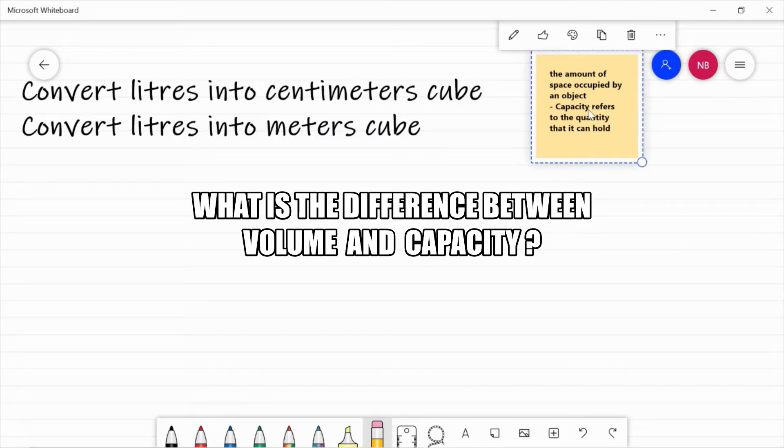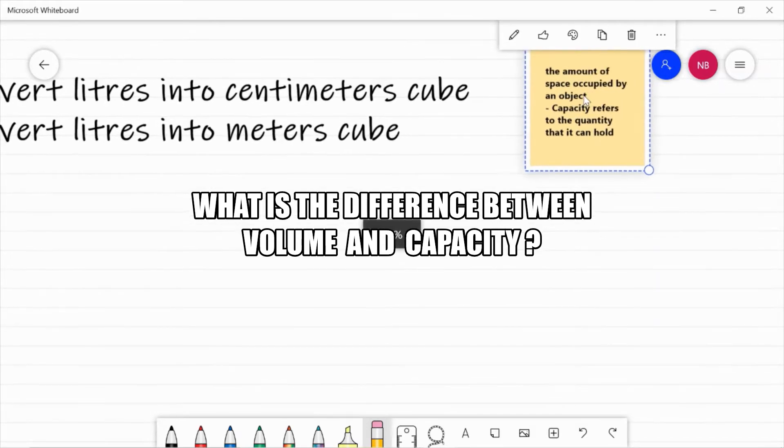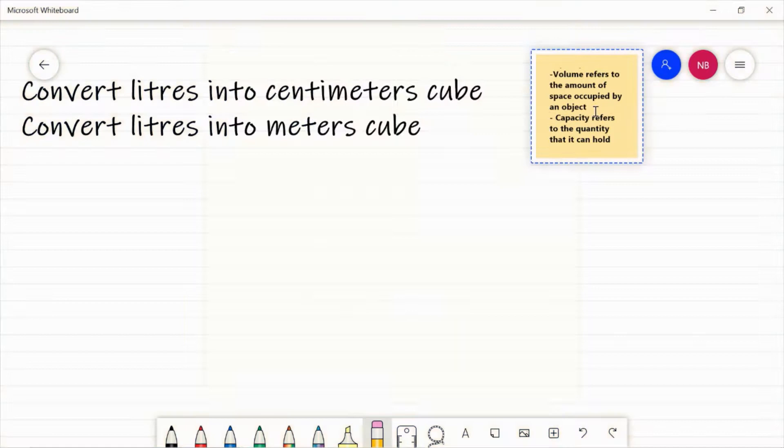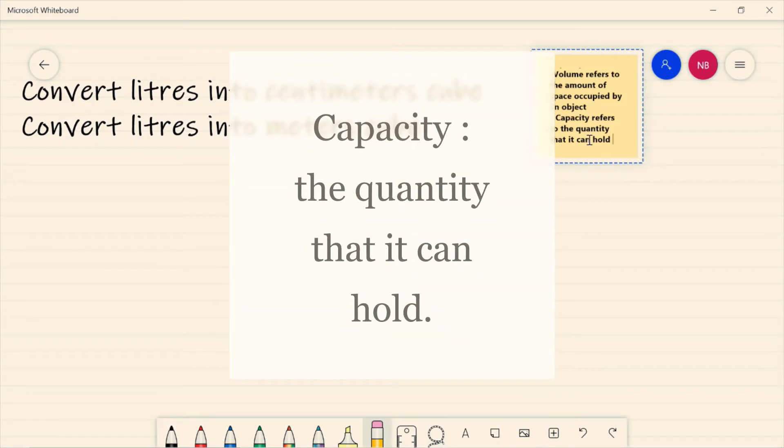But before that, I want you to know the difference between volume and capacity. Volume refers to the amount of space occupied by an object. When we calculate that it is in metre cube or centimetre cube, and the capacity refers to quantity it can pour.